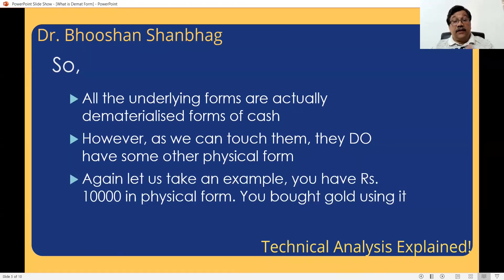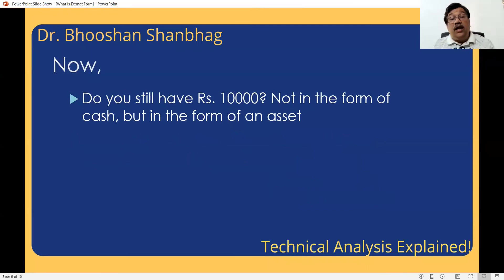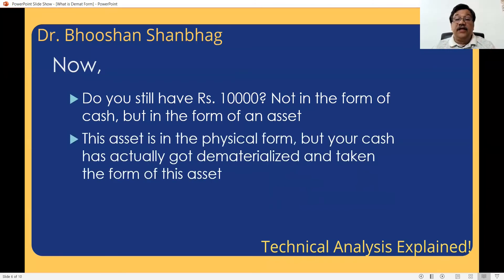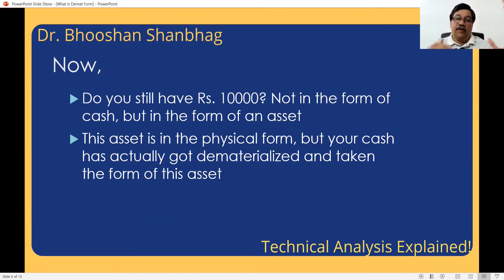Let us take another example. You have 10,000 rupees — a bundle of 100 rupee notes. You pay it to the jeweller and you buy gold. Now do you still have 10,000 rupees? Not in the form of cash, but now it is in the physical form of gold which you are holding. So this asset is in physical form, but actually your cash has got dematerialized and taken the form of an asset. To give this asset, you can get your money back — of course, with some price fluctuations when it comes to gold. You can convert from cash form to asset form and back.